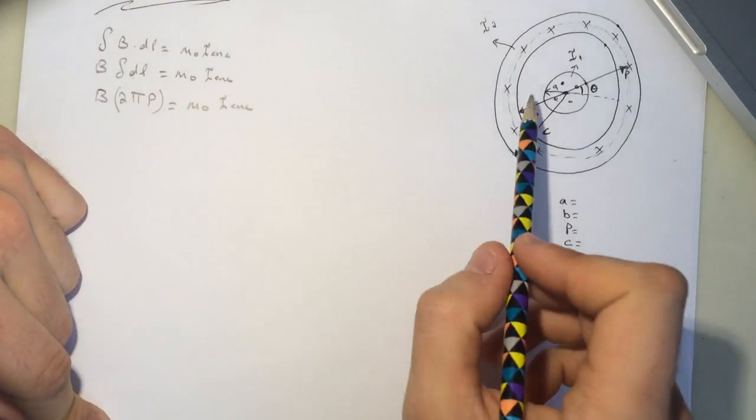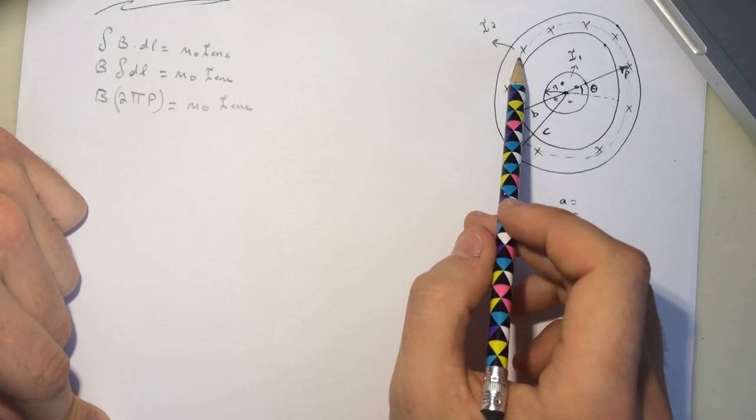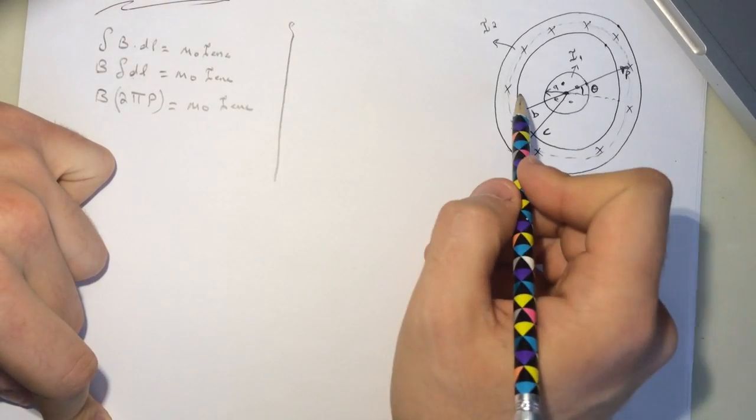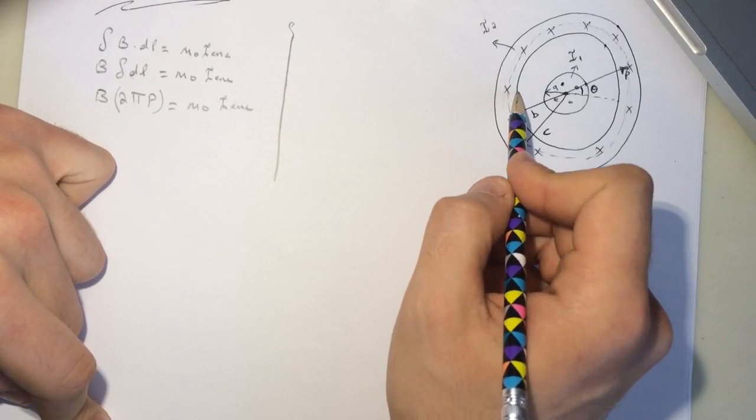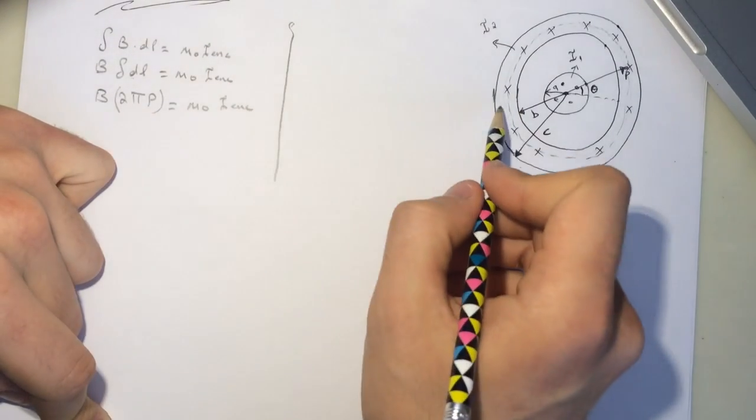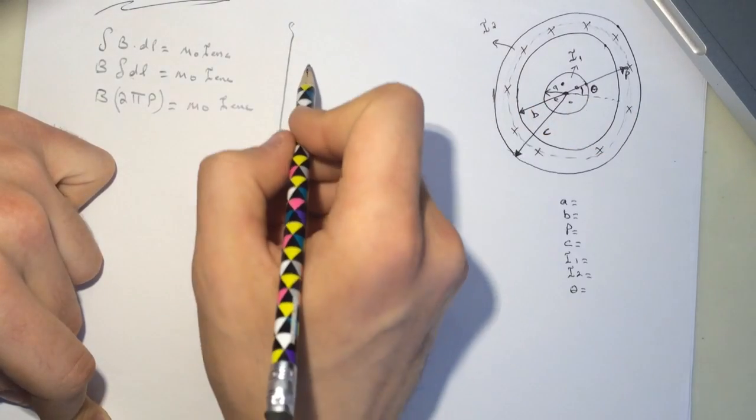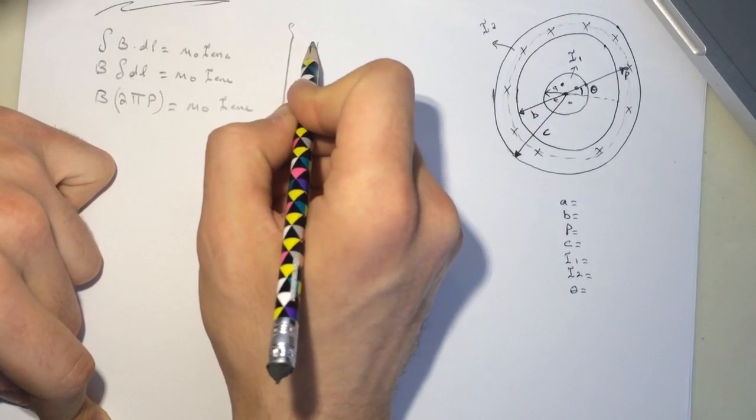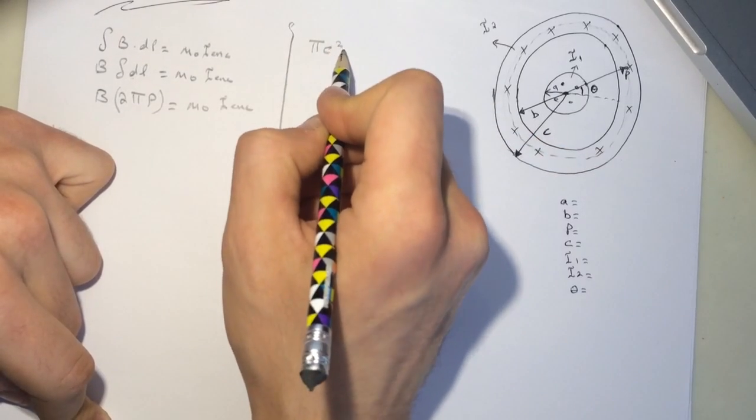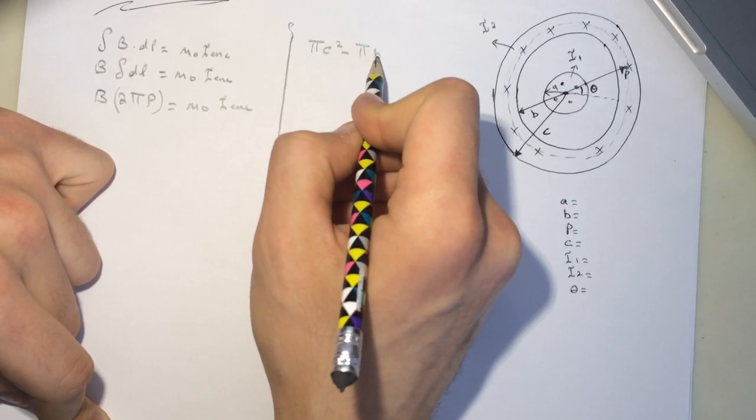Since we are not using the whole thing in i2, then we need to find the part of it that's enclosed. So let's find the area from here to here. The area from here to here is the area of the whole thing minus the area of this part here, which is pi p squared minus pi b squared.